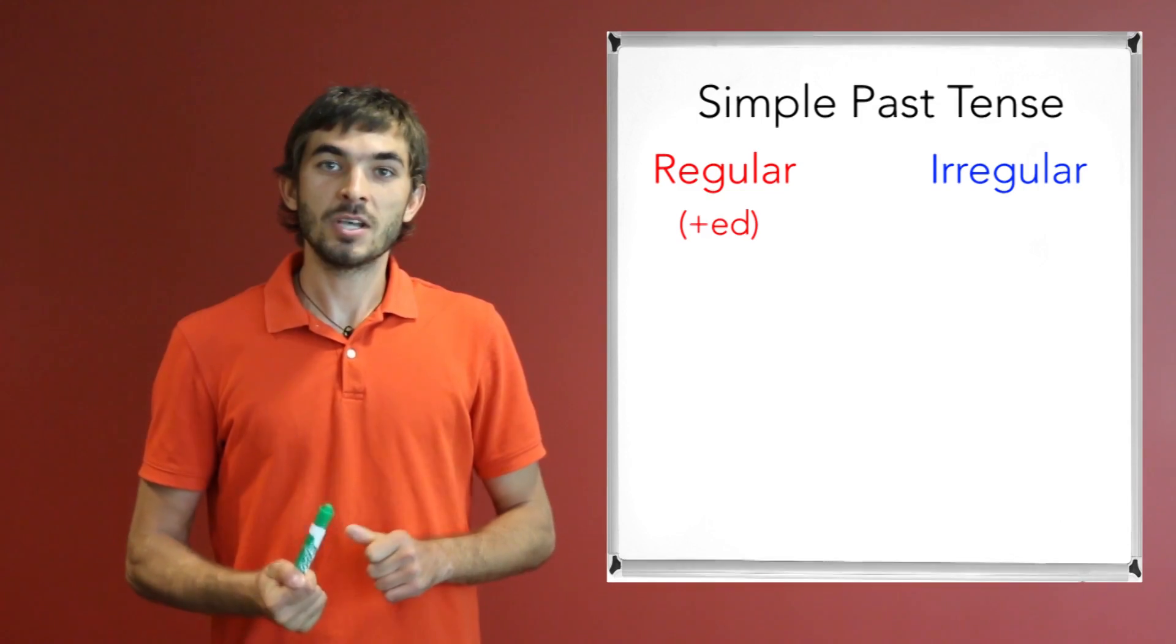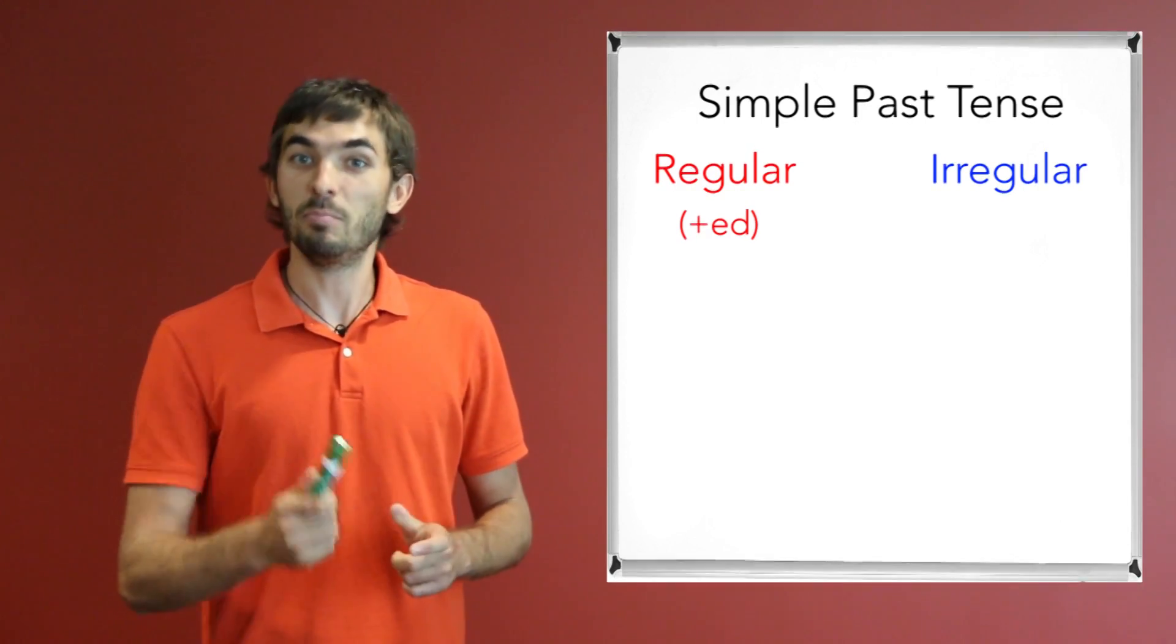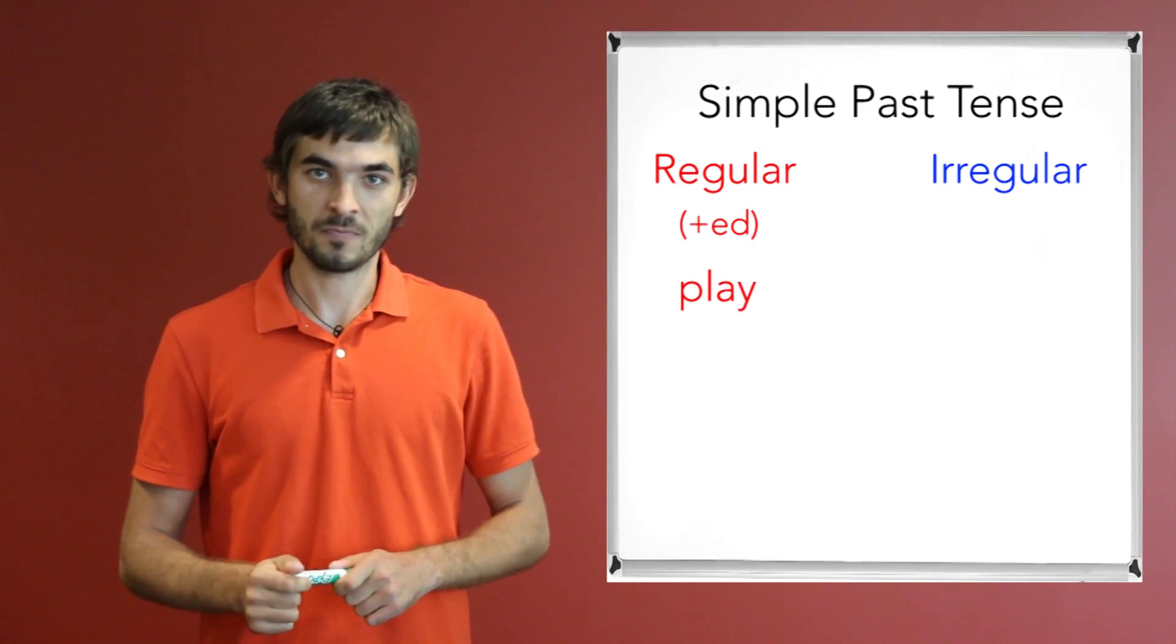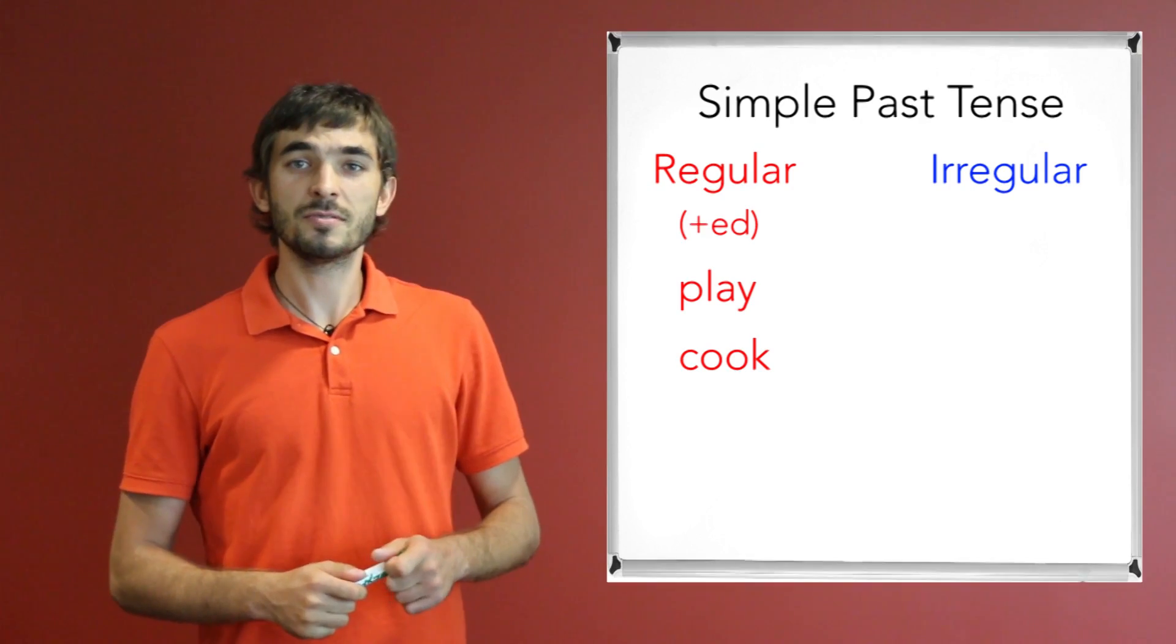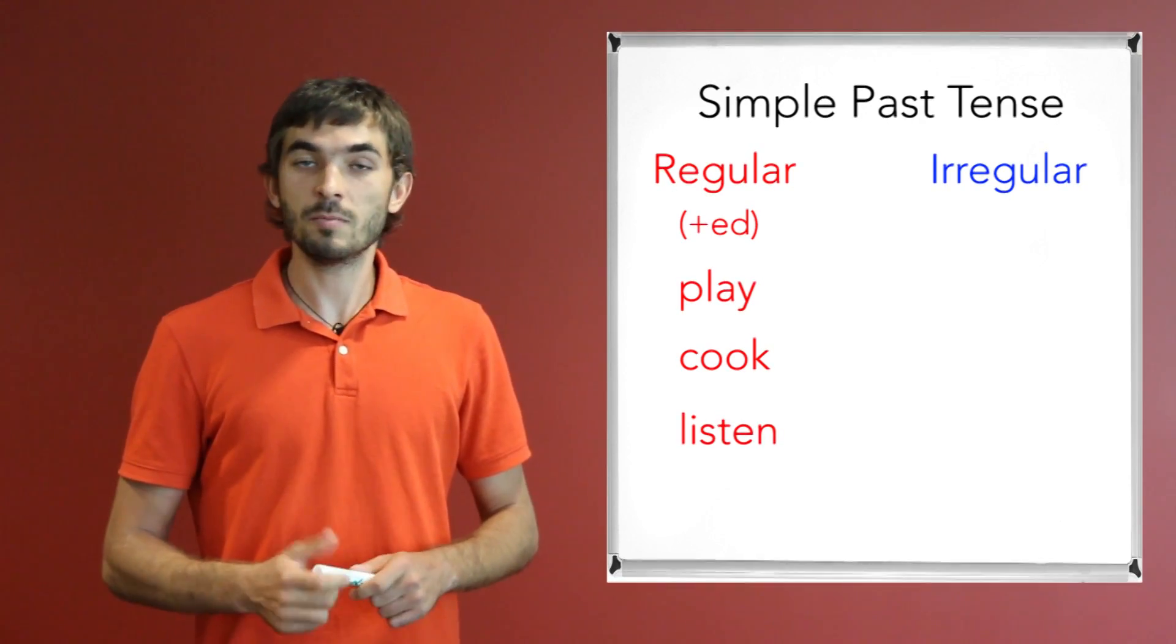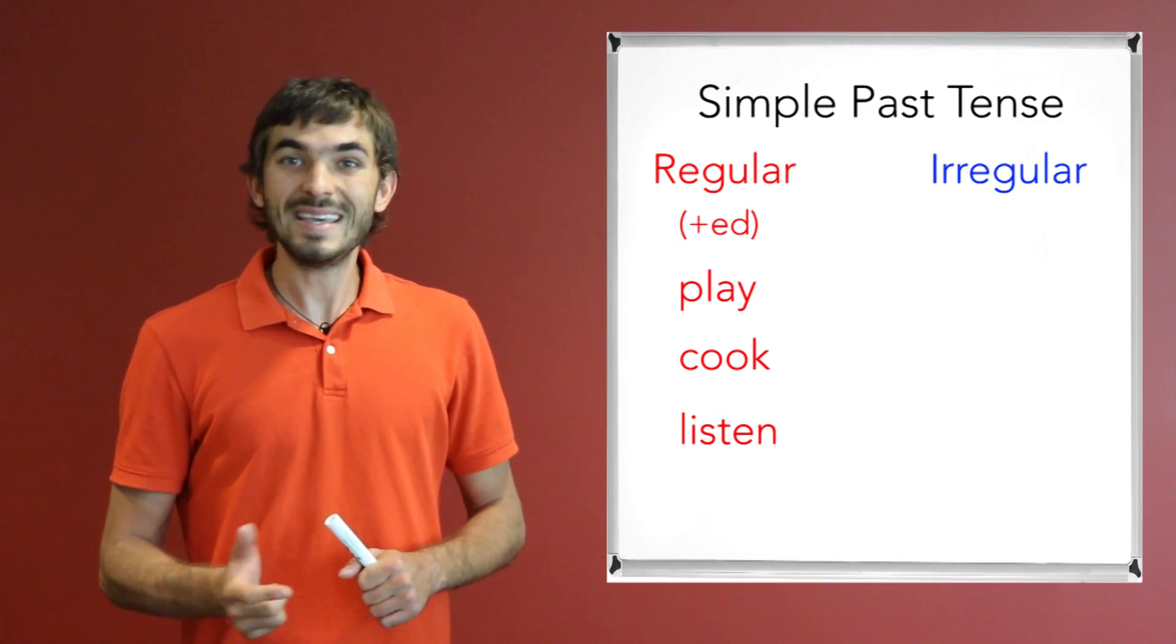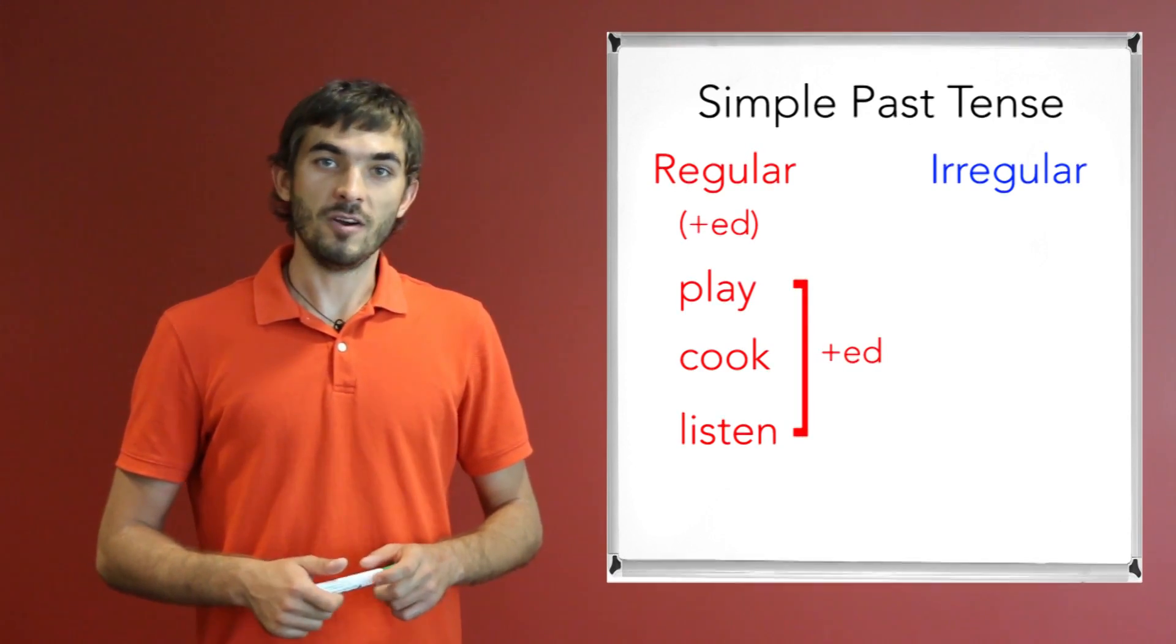Ok class, so give me some examples of regular verbs. Play? Yeah, that's a good one. Another one, cook. Good. And let's use listen. Good. So, in order to form simple past tense, the suffix '-ed' will be added to the verbs.